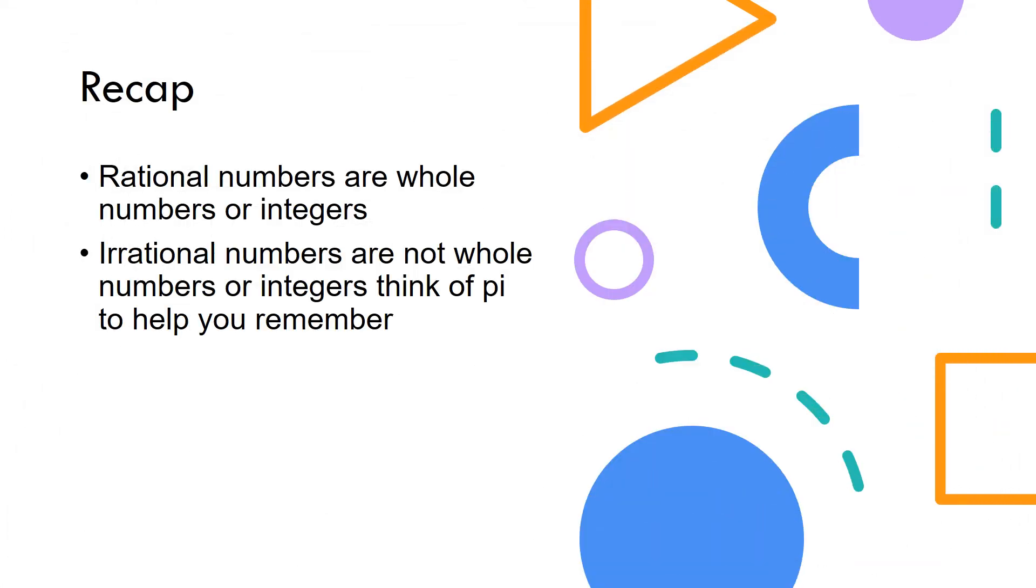Once again, rational numbers are whole numbers or integers, while irrational numbers are not integers or whole numbers. Remember to think of pi as an example of an irrational number because it just keeps on going after the decimal.